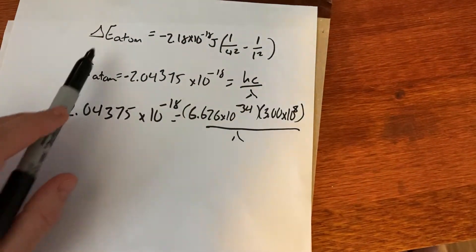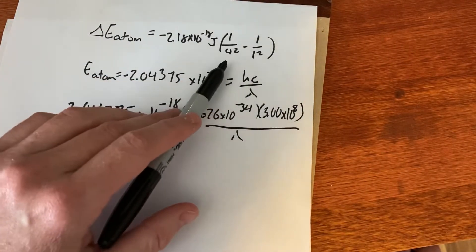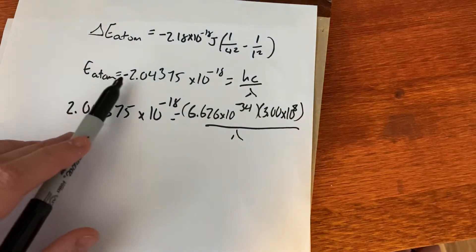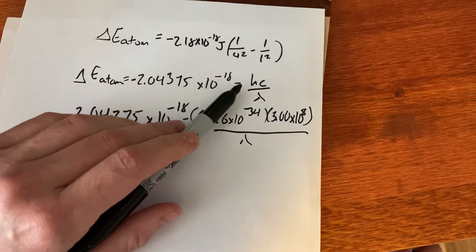So hopefully you got here. It looks like you took negative 2.18 times 10 to the negative 18, one over four squared minus one over one squared. And you get that the change in energy of the atom is equal to negative 2.04375 times 10 to the negative 18.